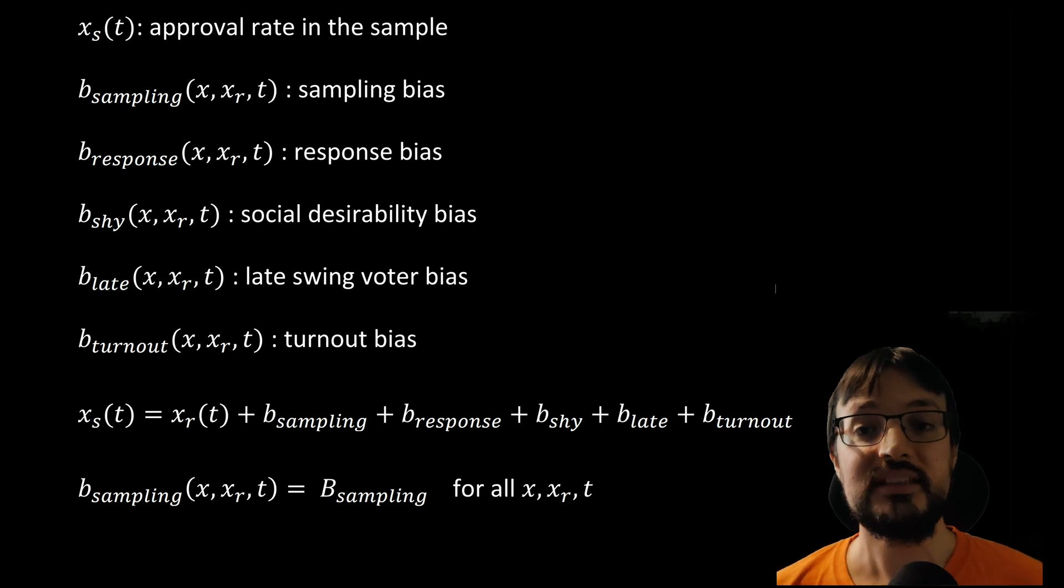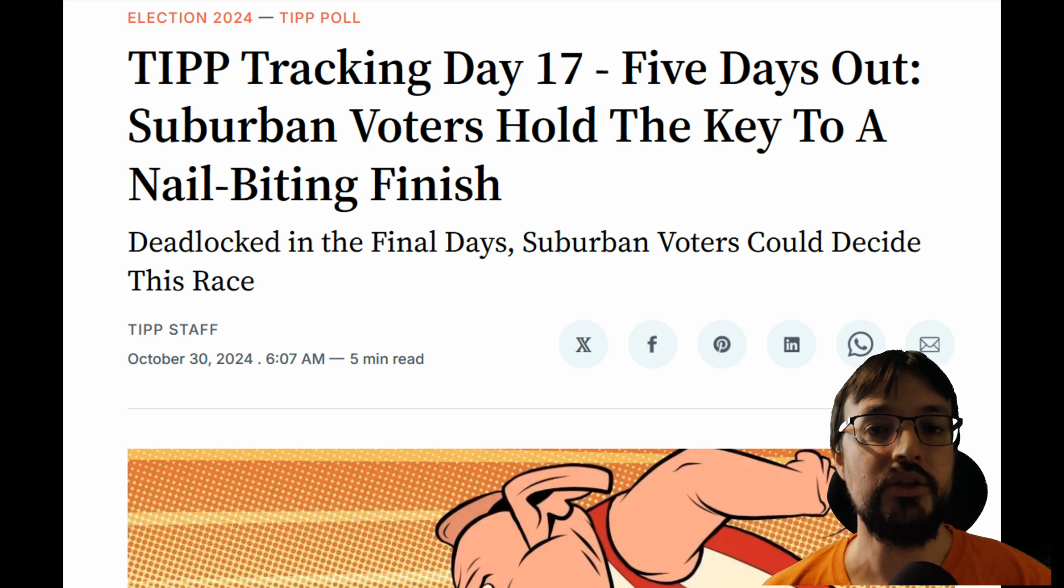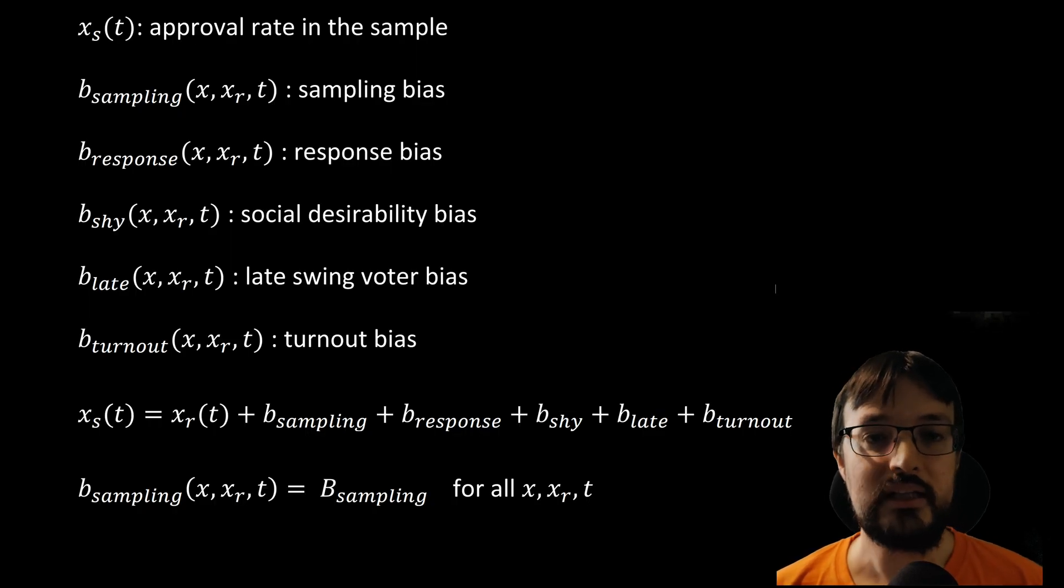First, there is sampling bias. Pollsters try to represent the entire voting population, but they rely on a sample, a smaller group selected to represent the whole. If you are polling for an election, you need to talk to both city and countryside voters, young and old, highly educated and less educated. But if you don't balance that sample well, you may not capture certain groups accurately. That's called the sampling bias. We indicate sampling bias with a function called b_sampling(x, x_r, t). We don't know what this function is, and generally we assume that it may depend on both x, x_r and also time. We will come back to this later, but let's move on for now.